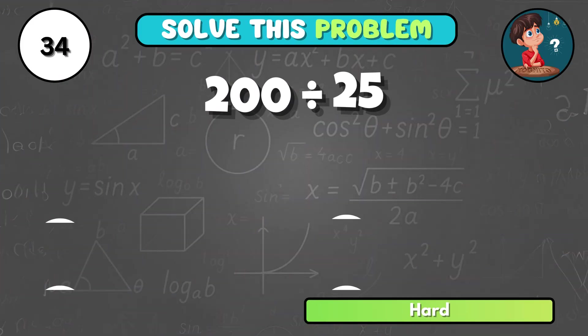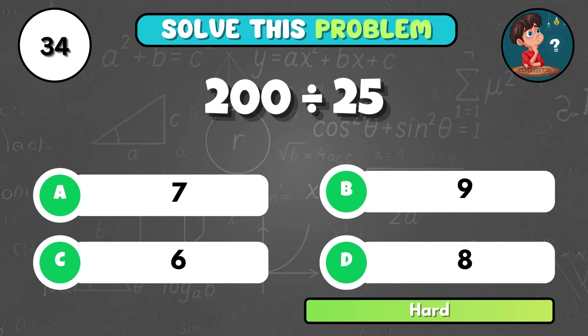How many groups of 25 are there in 200? That's D, 8.